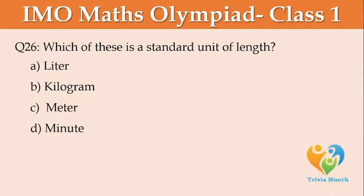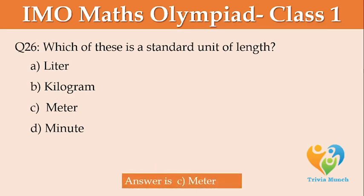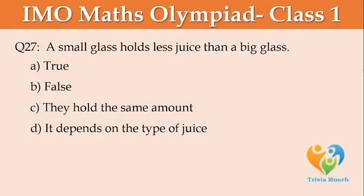Which of these is a standard unit of length? Option A: Liter, Option B: Kilogram, Option C: Meter, Option D: Minute. A small glass holds less juice than a big glass. Option A: True, Option B: False, Option C: They hold the same amount, Option D: It depends on the type of juice.